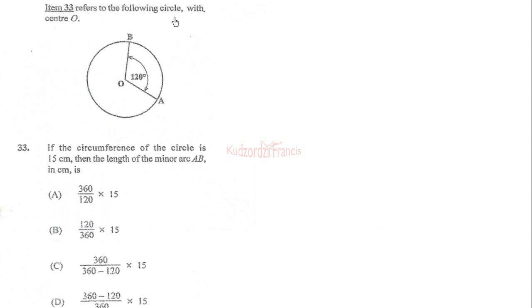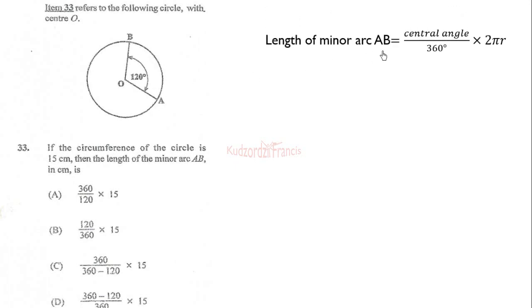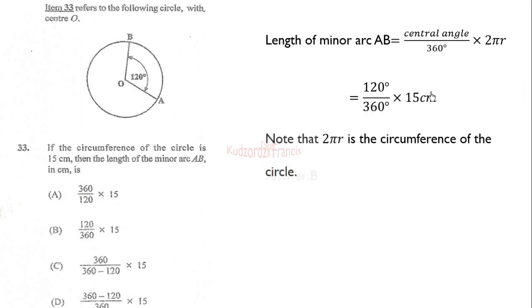Item 33 refers to the following circle with center O. If the circumference of the circle is 15 centimeters, then the length of the minor arc AB is found using: arc length equals the central angle divided by 360 times the circumference. We substitute 120 for the central angle and 15 for the circumference, giving option B as the correct answer.